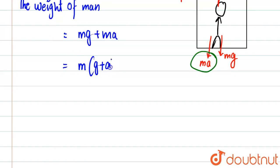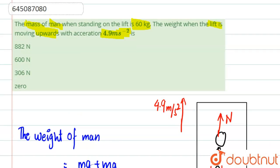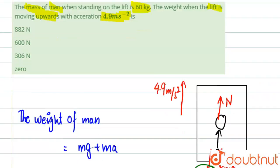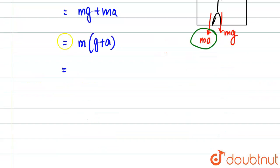This will come out to be m times (g plus a). What is m? Mass is given as 60 kilograms, so we're going to use that.